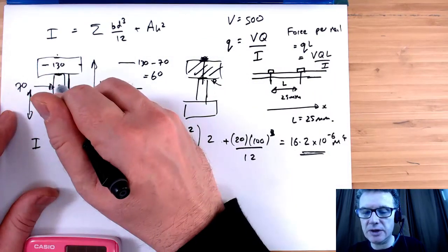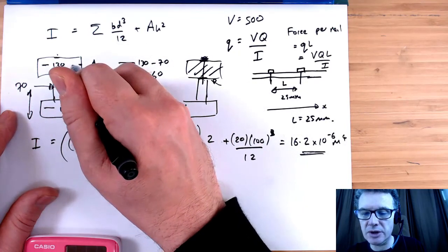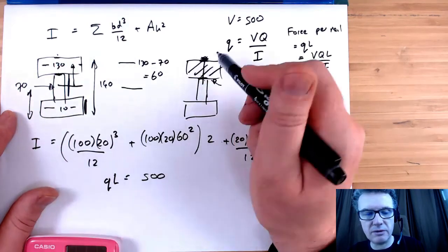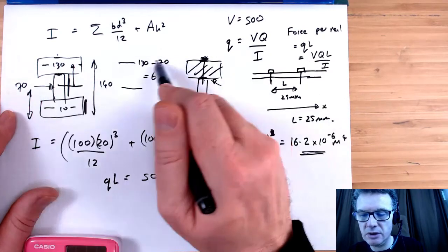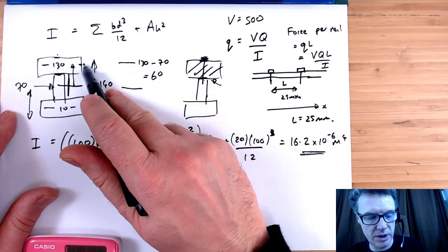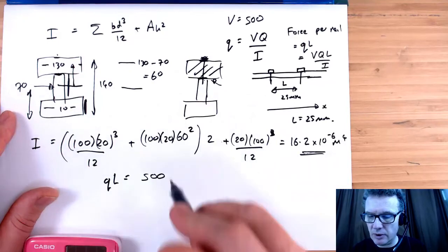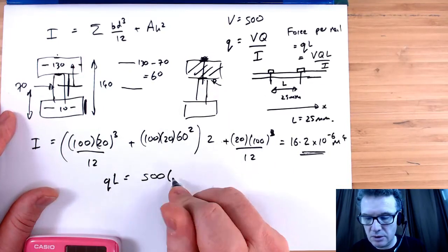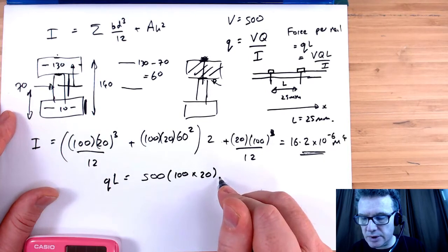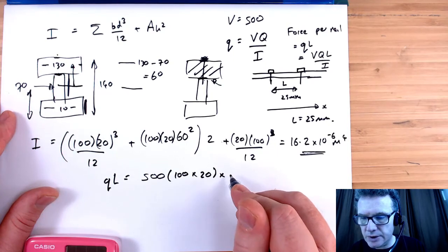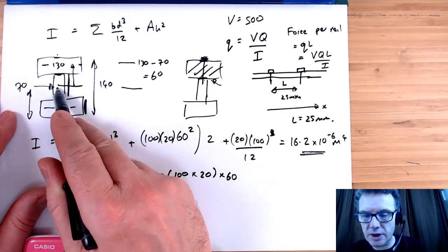So what's the Q going to be? This time we need to find the distance from the neutral axis to its centroid. So what's that value there? The neutral axis is 70, its centroid is going to be 130. So this actually is the same as H. We've got the area of the top section, 100 times 20, times 60.